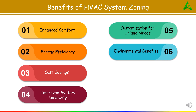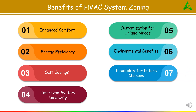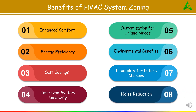For example, a zoned home uses a smart thermostat to automatically reduce energy use during peak times, aligning with sustainable practices. The next benefit is flexibility for future changes — zoning allows easy adjustment if building usage changes over time. And the last benefit is noise reduction. Zoning can lead to quieter HVAC operation by reducing the need for the entire system to run at once. In a zoned home, the system operates only for the active zone, reducing noise levels in other areas like bedrooms during nighttime.